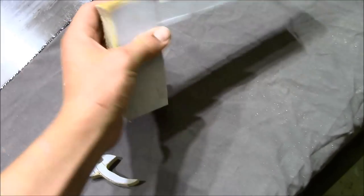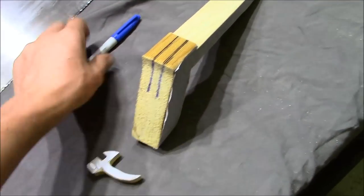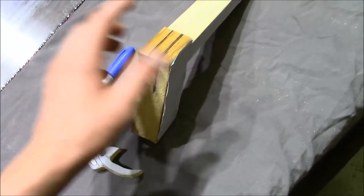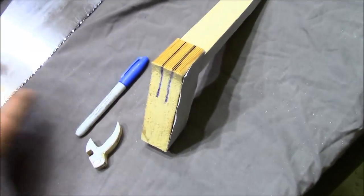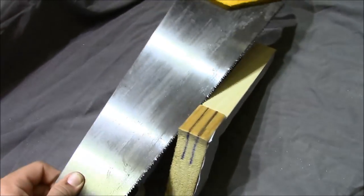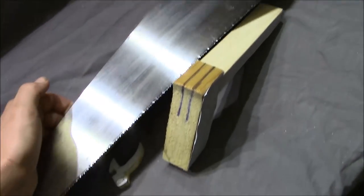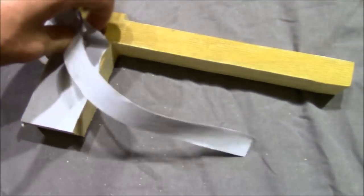Once you've cut your two pieces out you're going to need to draw two lines down the back of your crossbow. Those lines are going to need to be the same width as your trigger. Then you're just going to need to cut down those lines with a wood saw. You can go ahead and peel off the paper.